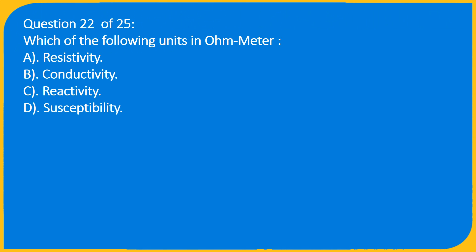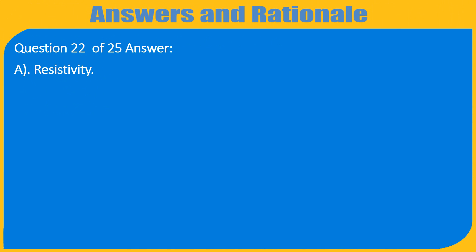Question 22 of 25: Which of the following has units of Ohm-meter? A. Resistivity, B. Conductivity, C. Reactivity, D. Susceptibility. Answer: A. Resistivity.